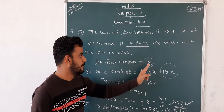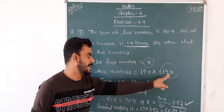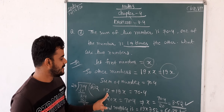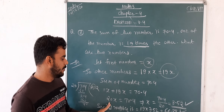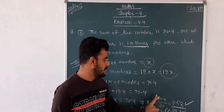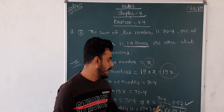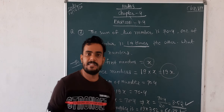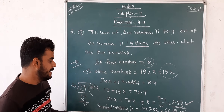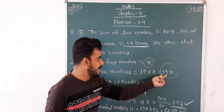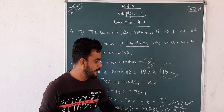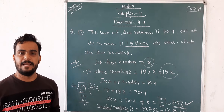The sum of the numbers is 70.4, which means x plus 19x equals 70.4. x means 1x. Then 1x and 19x equals 20x. 20 is in multiply, so 20 will be changed to divide: x equals 70.4 by 20. So the answer is 3.52 for the first number. For finding the second number, we have to multiply 19 by the first number: 19 into 3.52 equals 66.88.